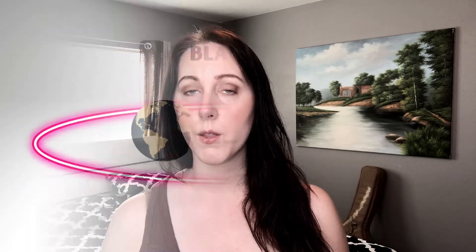Black Moon Lilith is not a planet, it's not an asteroid — it is a point in space. It's called a lunar apogee, and it is the distance from the earth to the furthest point on the moon's orbit. The moon travels around the earth in an elliptical orbit, it's not a perfect circle, so there is a point that ends up being further away from the earth on that orbit, and Black Moon Lilith is that point in space.